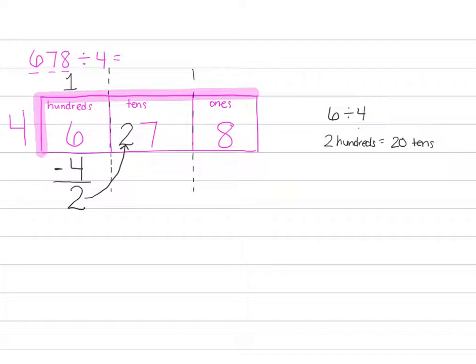All right, 27 divided by 4. And if this is tricky for you, just go ahead and skip count by 4s until you get to a number that is close to 27, but not larger than it. Okay, 4, 8, 12, 16, 20, 24, 28.